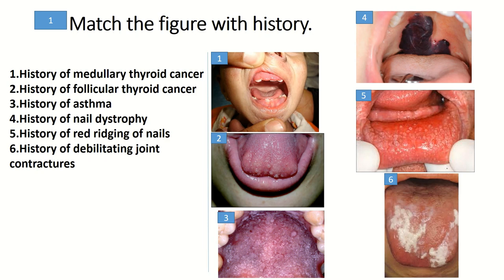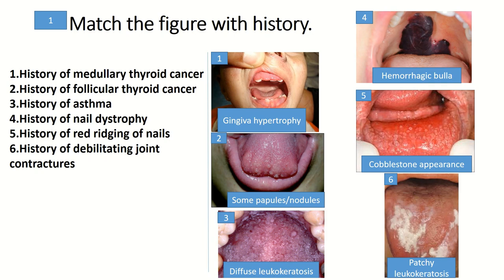Question 1: Match the figure with history. In image 1 there is gingival hypertrophy. In image 2 there are some papules and nodules in the anterior of the tongue. In images 3 and 6 there is leukokeratosis — diffuse form in image 3 and patchy in image 6. In image 4 there is a hemorrhagic bulla, and in figure 5 there are papules in a cobblestone configuration.